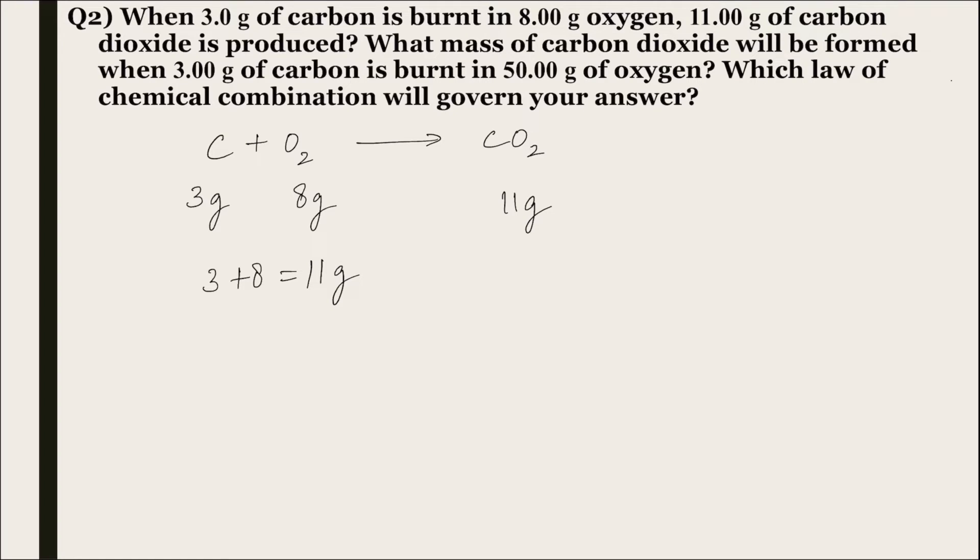Now in the second part of the question it is asked that what mass of carbon dioxide will be formed when 3 gram of carbon is burnt in 50 gram of oxygen. According to the law of constant proportion 3 gram of carbon will always combine with 8 gram of oxygen.